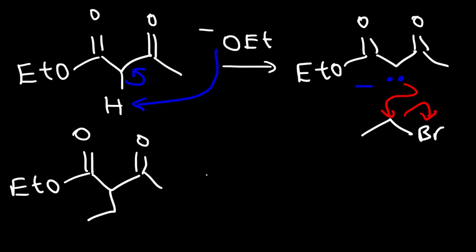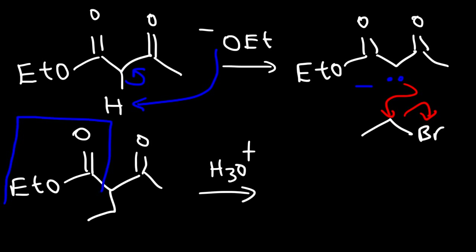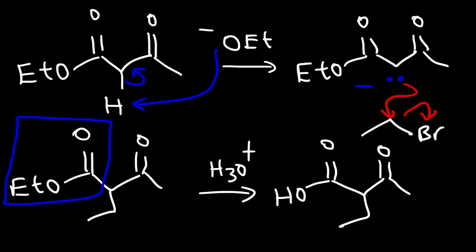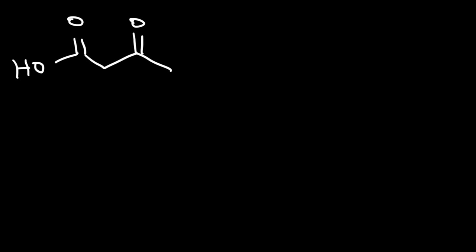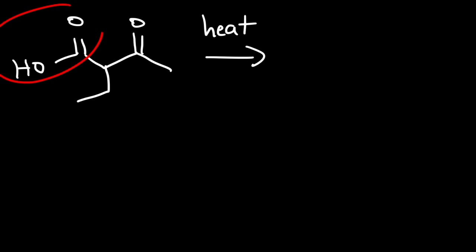The next step in the process is to react this molecule with H3O+. What's going to happen is the ester is going to be converted into a carboxylic acid. In the next step, we just need to heat the solution. Once we heat the solution, decarboxylation will occur — we're going to lose the carboxylic acid part of the molecule — and we're left with a ketone.